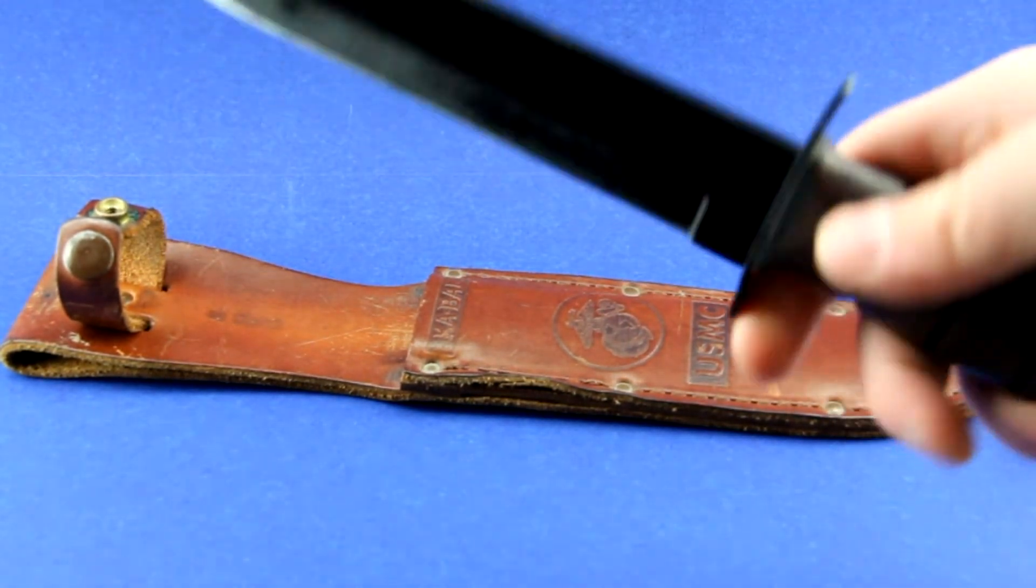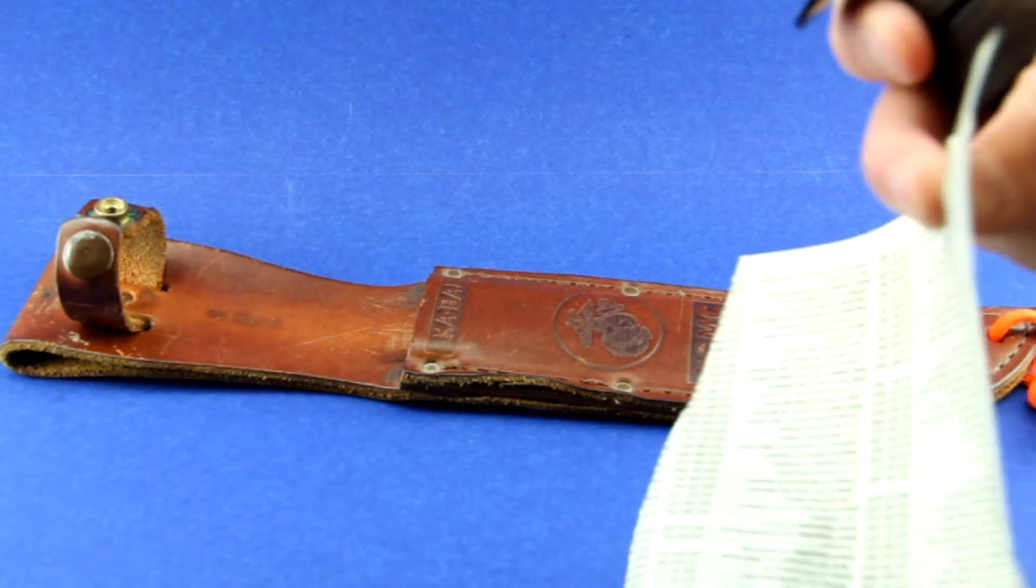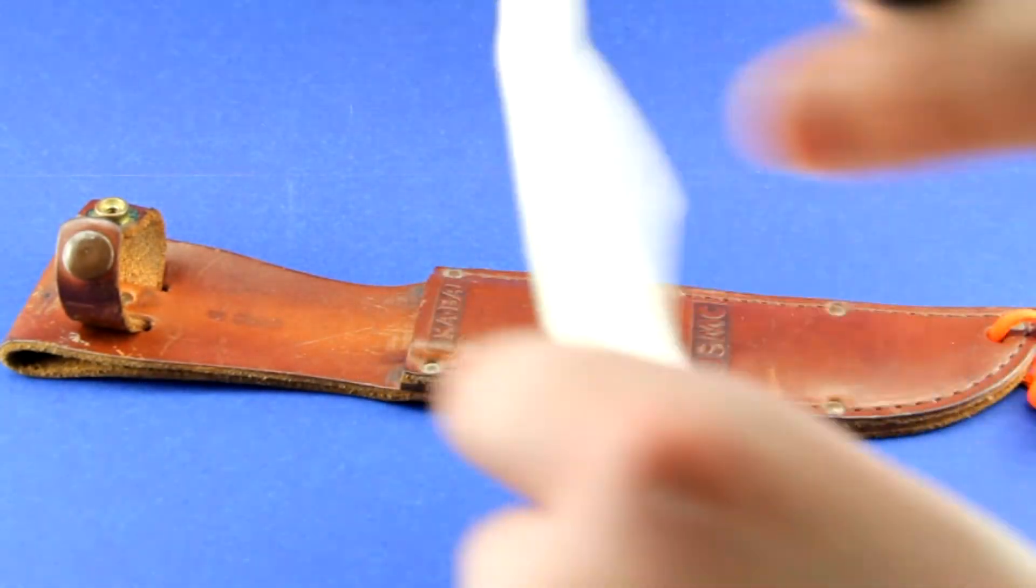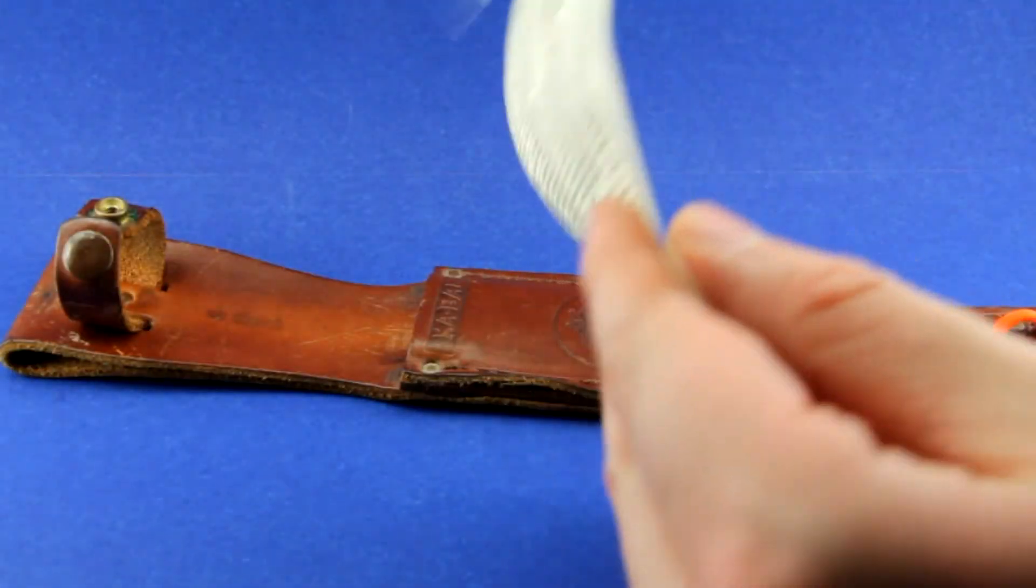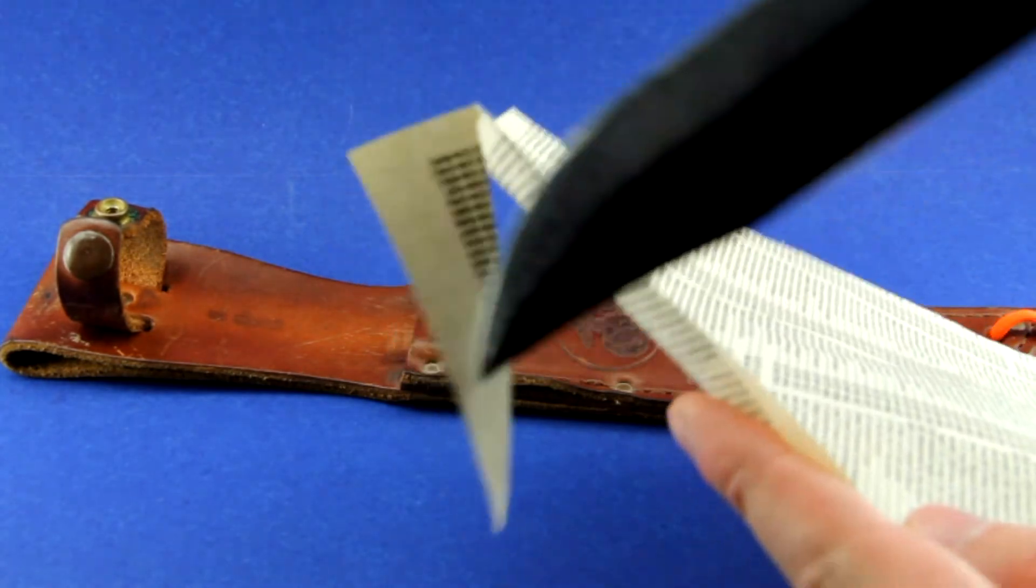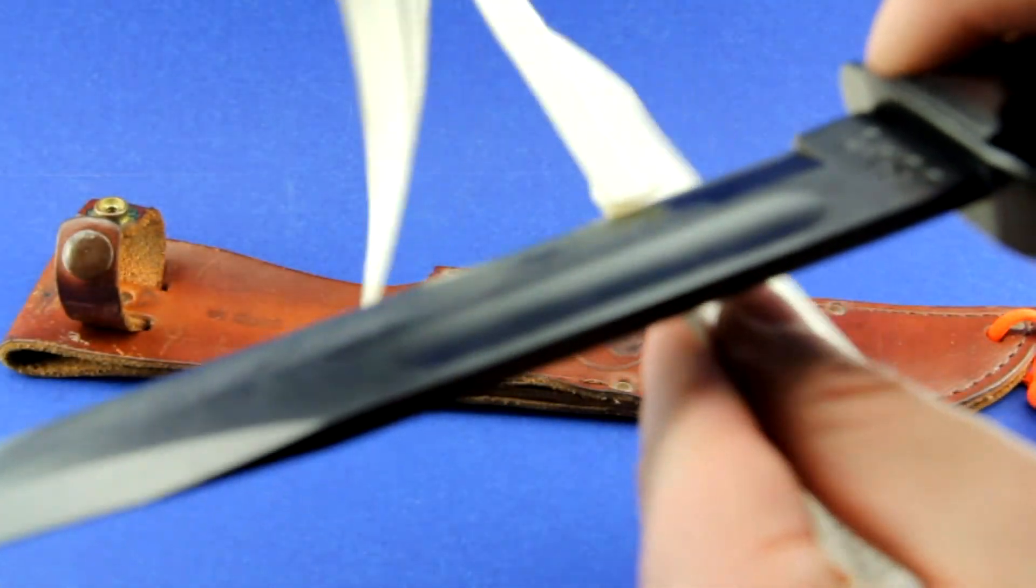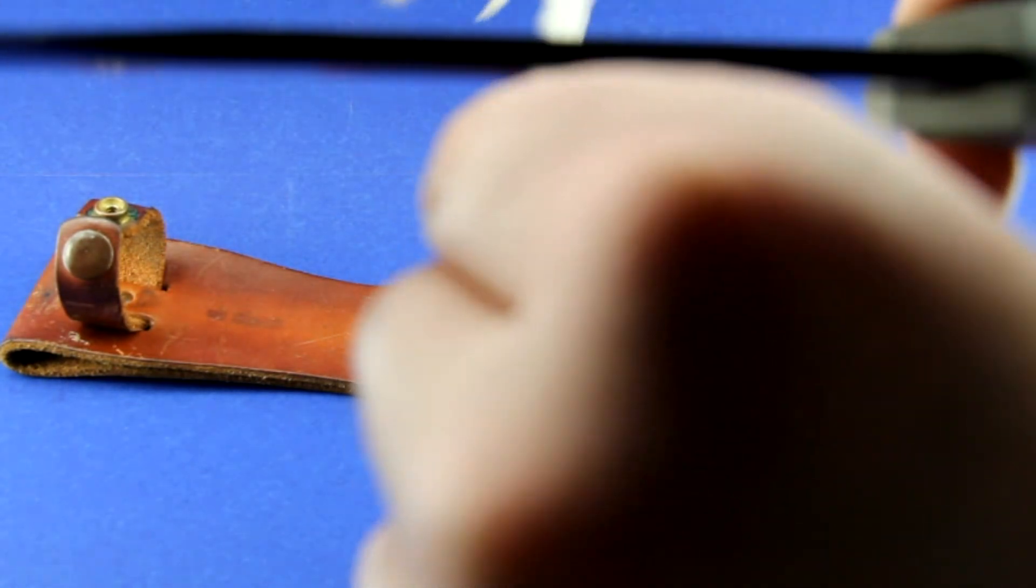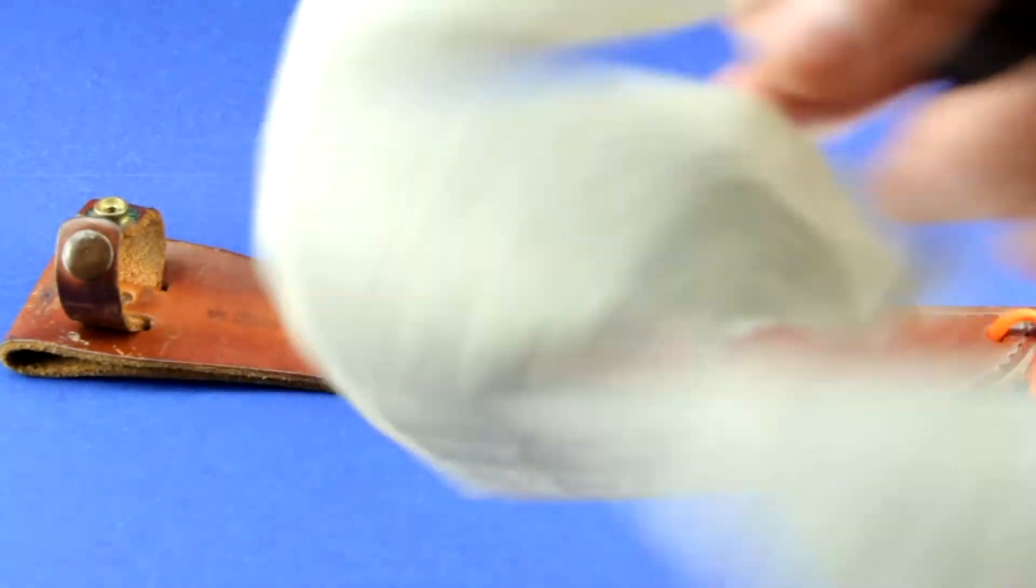Let's take a look at how it slices this paper. I've got some phone book paper which is incredibly thin. As you can see, it just falls right off. It's a little hard to do a slow cut because of the softness of the paper, but it is just cutting right through the paper. It is really rather sharp.